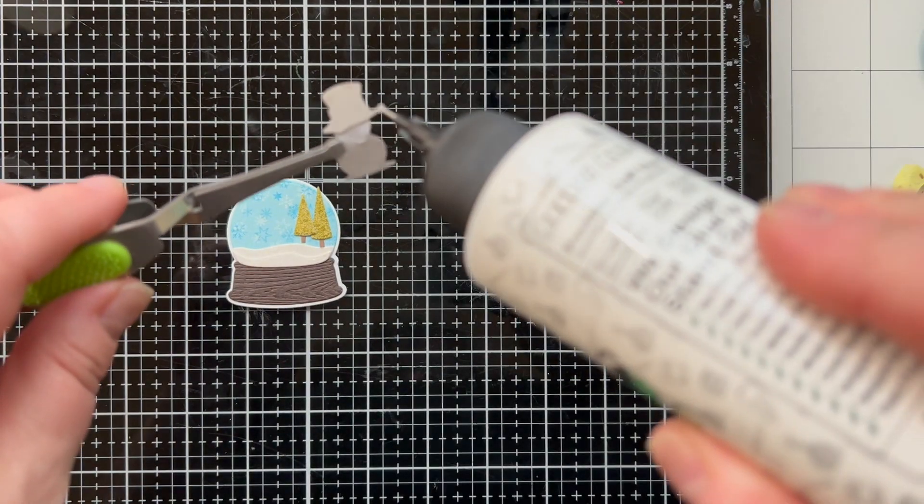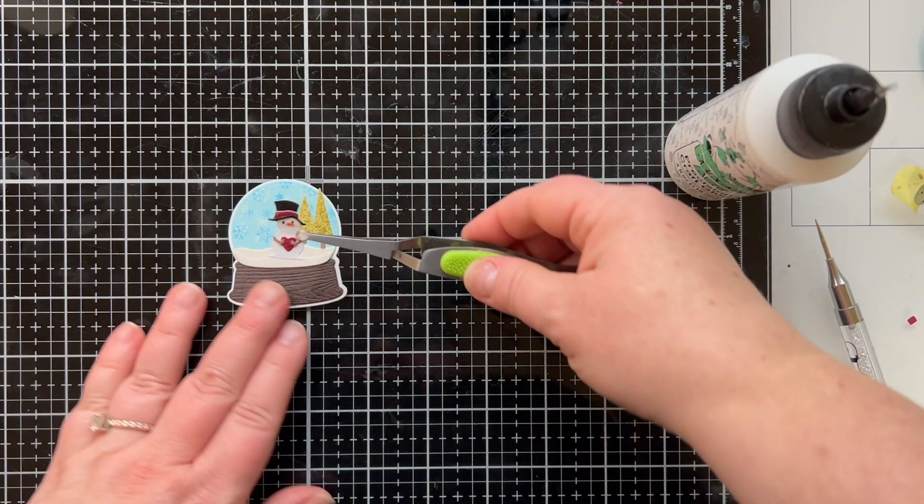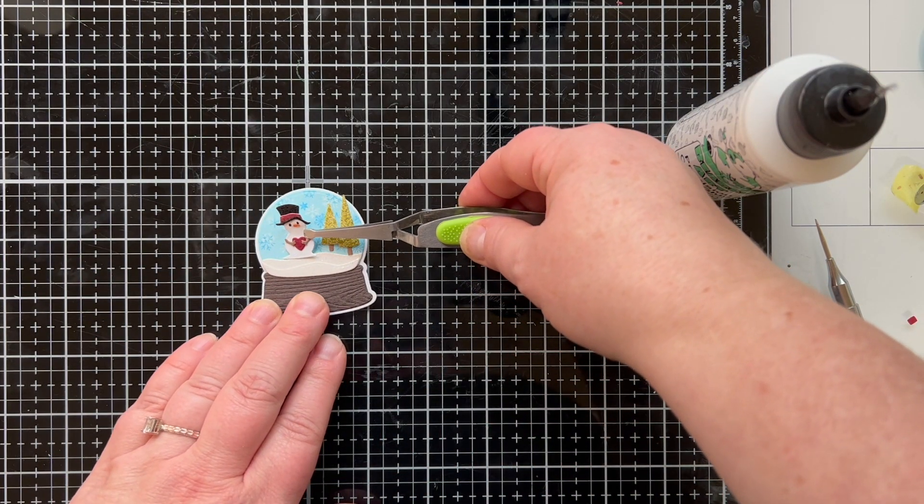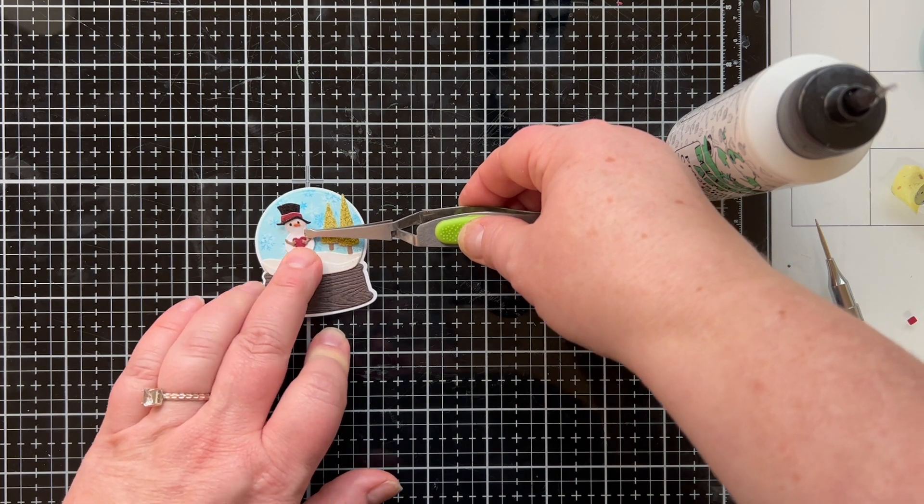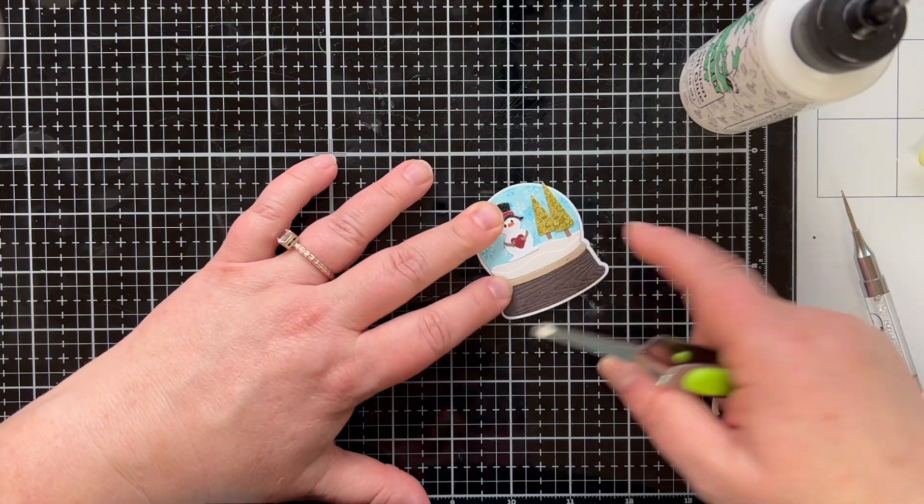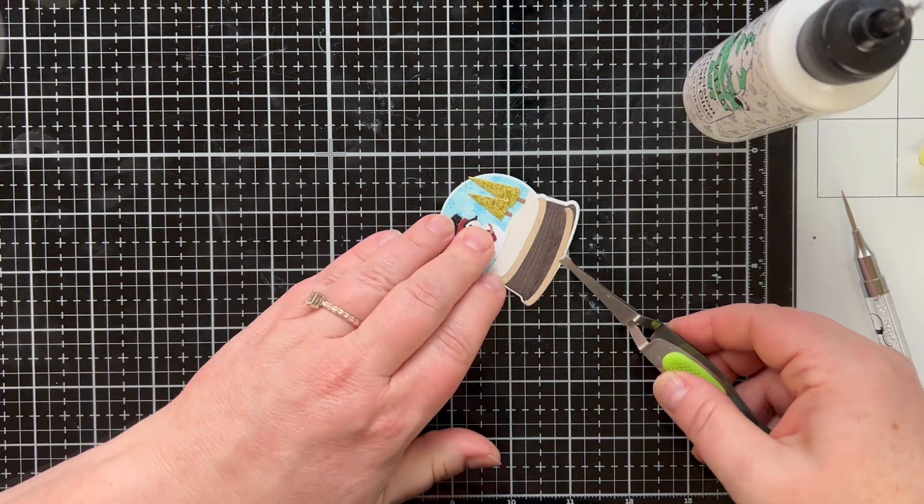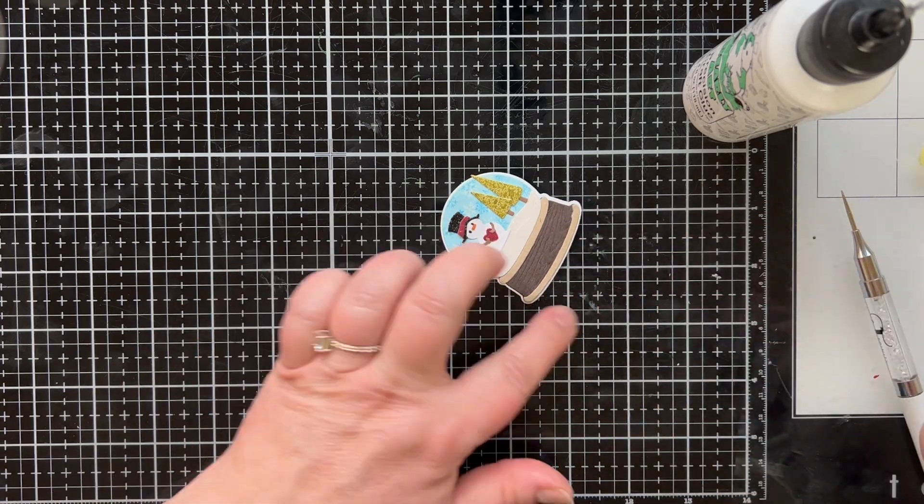We'll glue him into place, it's just a really darling little snowman. And then these pieces that accent the wooden base, or maybe yours is going to be metallic, either way they can then be glued on and they fit perfectly.